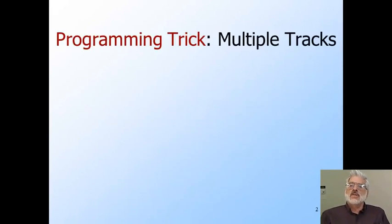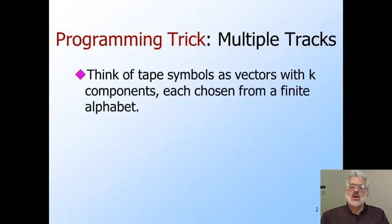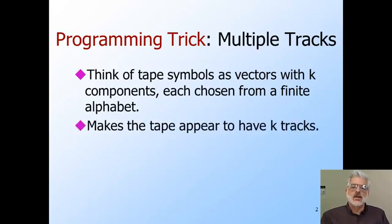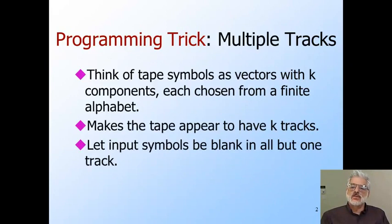The first programming trick is thinking of the tape as if it had multiple tracks. This idea enables us to describe Turing machines that do things like leave markers on their tape so they can find their way back to an important place. We get k-tracks if we think of each tape symbol as a vector with k-components, each component chosen from some finite alphabet. We can think of the i-th component of each tape symbol as forming the i-th track. Input symbols will have the blank symbol in all components but one, which then becomes the track on which the input is placed.